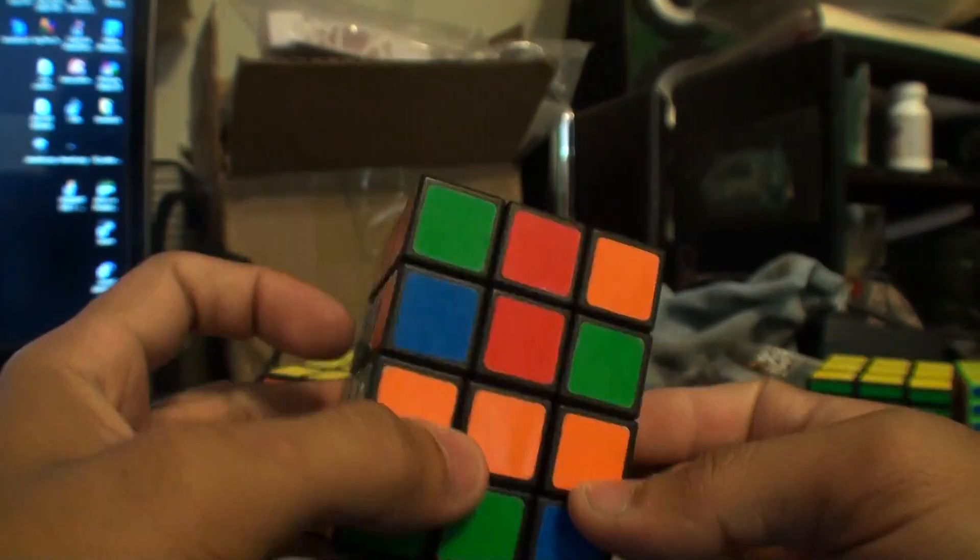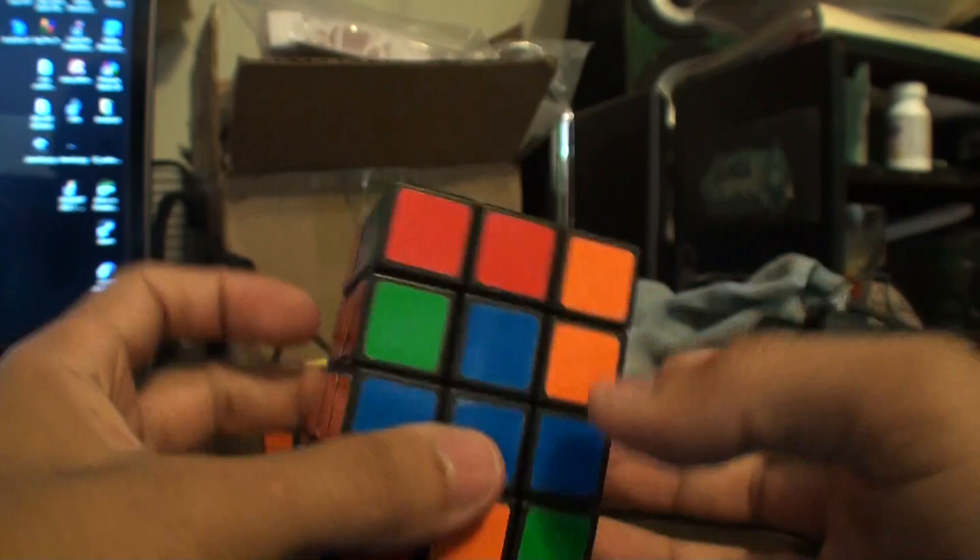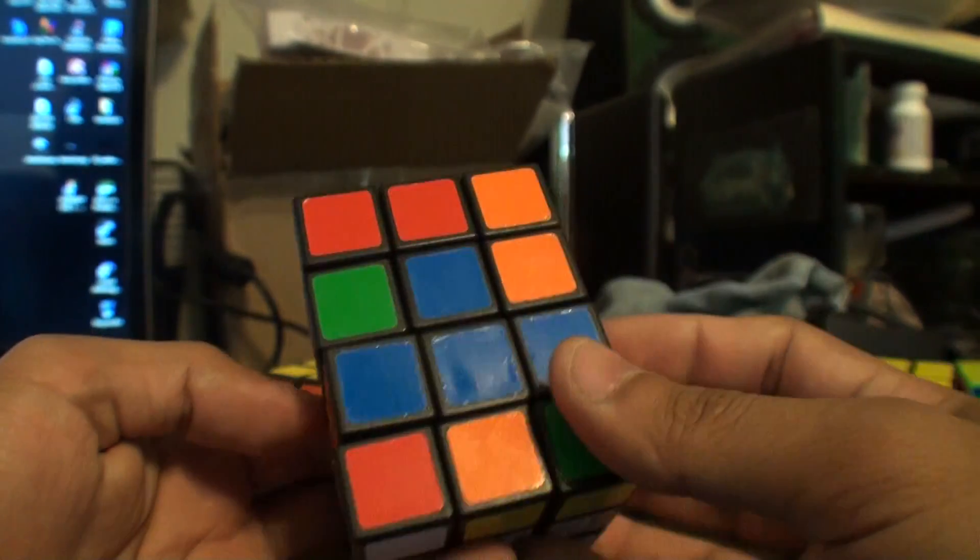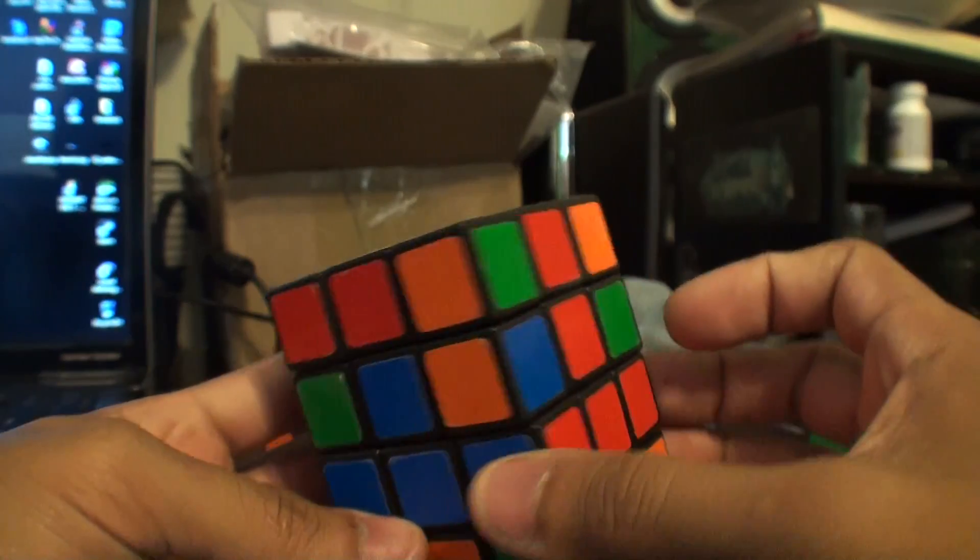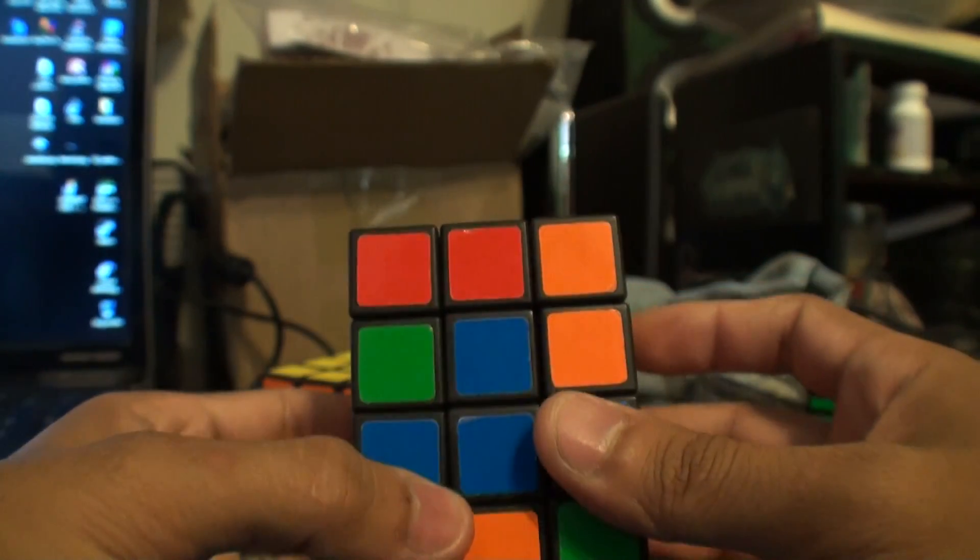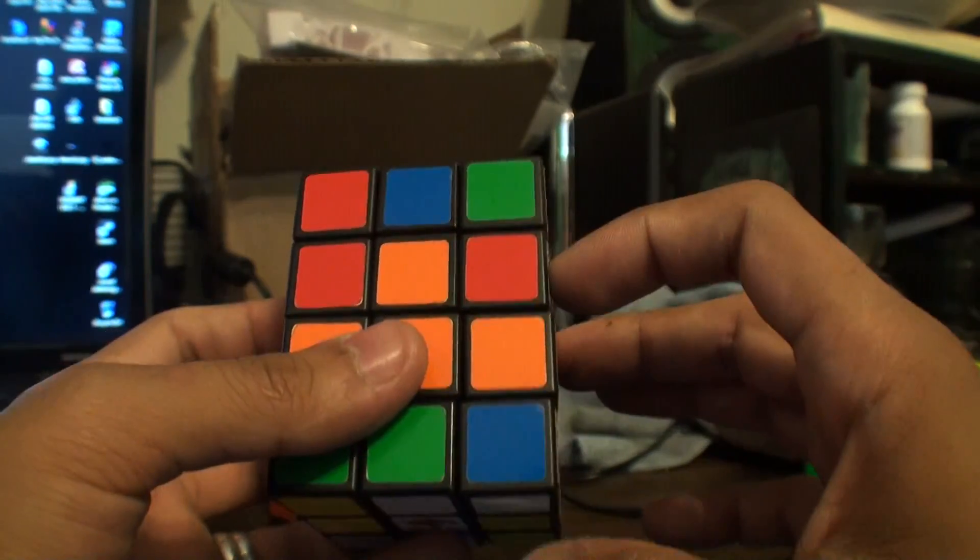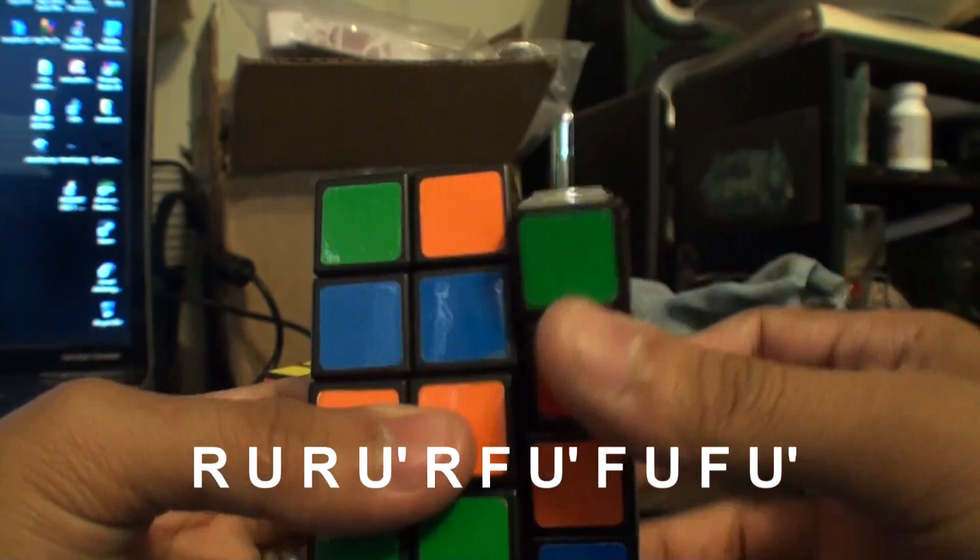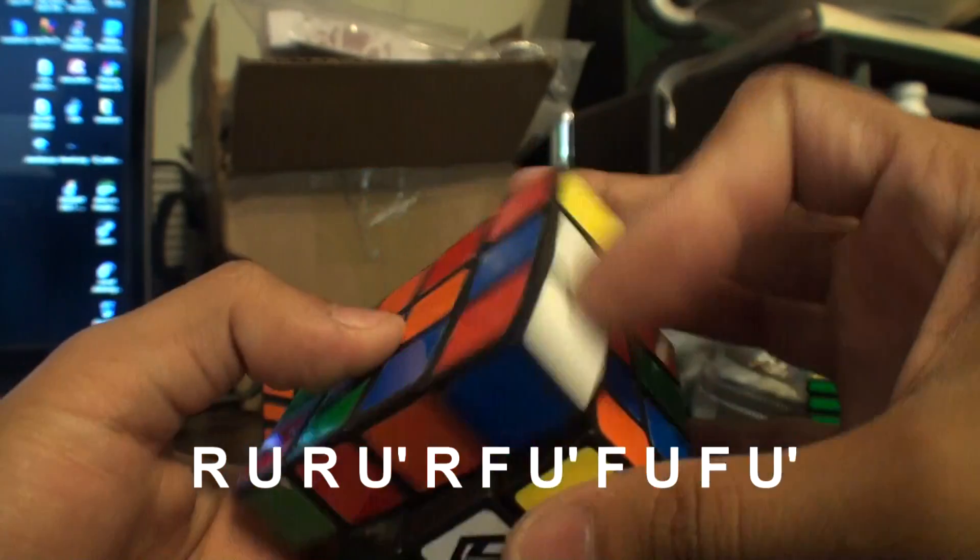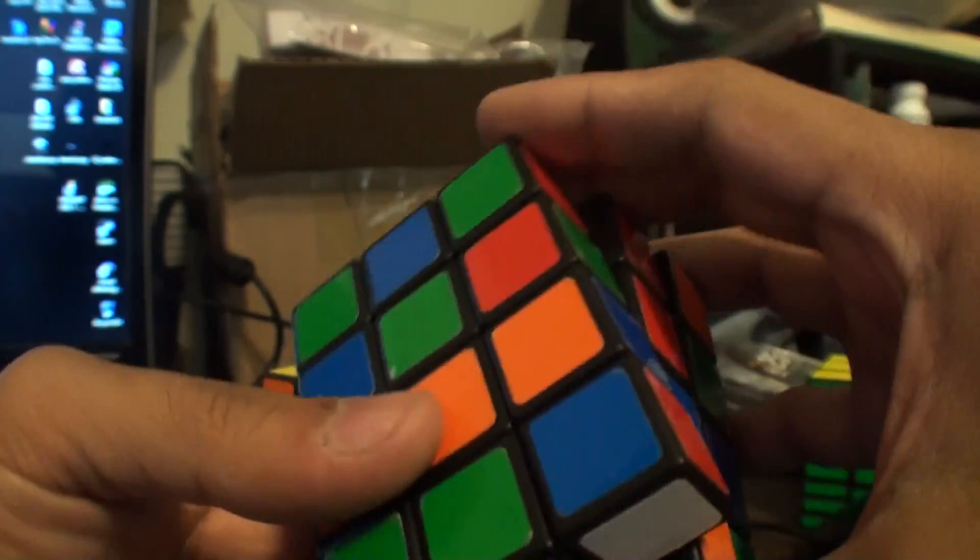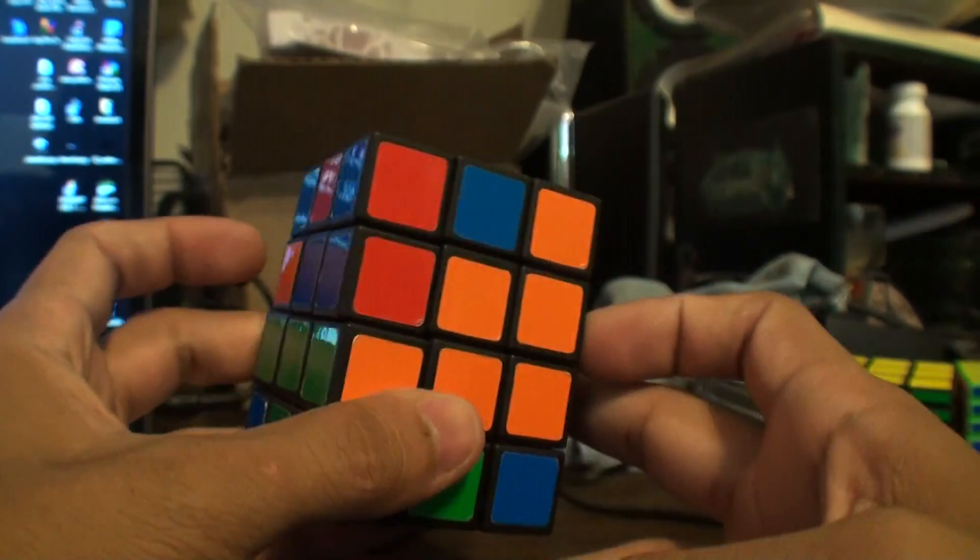Now we're going to be trying to fix these pieces out here. So basically you're just going to solve it however you want like I showed you on the domino video. So I'm going to swap these two corners. So it's R U R U' R F U' F U F U'.